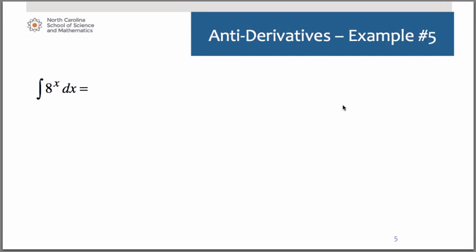And finally, our last example. We're doing anti-derivative of eight to the x. This was another one of the special rules for you to memorize. It's going to be eight to the x divided by natural log of eight plus c.